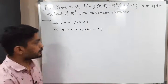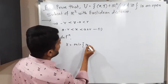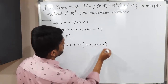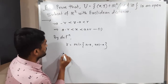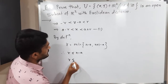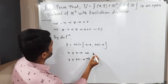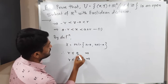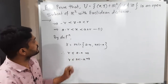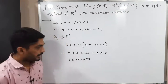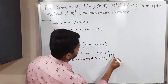By the definition of r = min(a - n, n+1 - a), r is less than or equal to each of them. So r ≤ a - n and r ≤ n+1 - a. Rearranging the first: n ≤ a - r. Rearranging the second: a + r ≤ n+1. I will call this inequality (2).